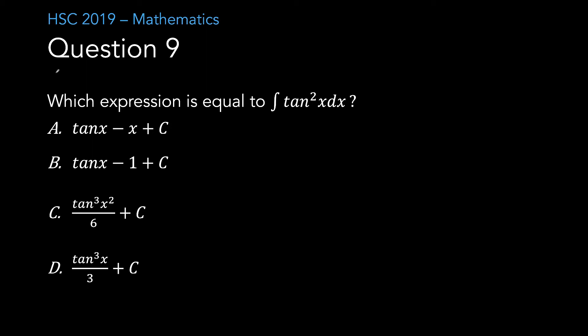Question 9. Which expression is equal to the integral of tan squared x dx? This requires you to remember that tan squared x is equal to sec squared x minus 1. From that, I'm now going to integrate sec squared x minus 1. You're given a reference sheet and it tells you what the integral of sec squared x is, and it's tan x, and the integral of 1 is simply x. Don't forget to add your C. So your answer is tan x minus x plus C. The answer there is A.